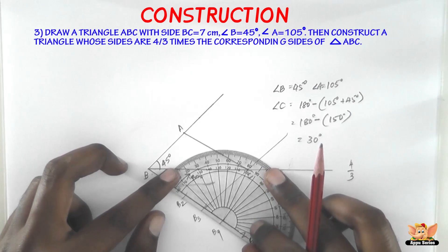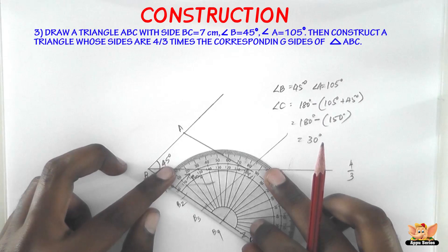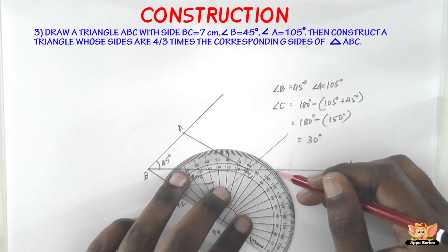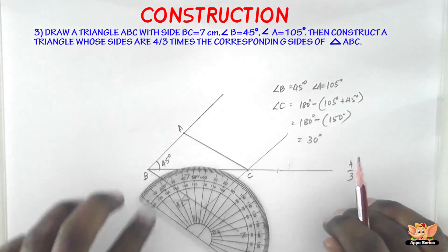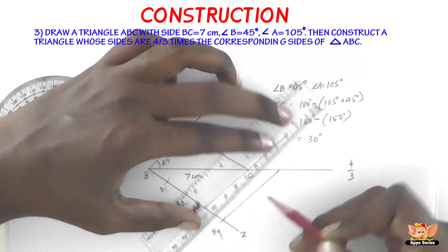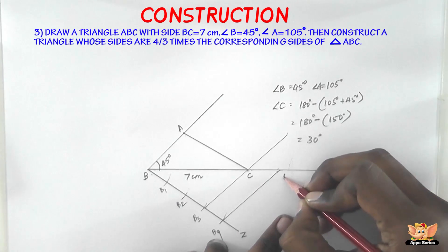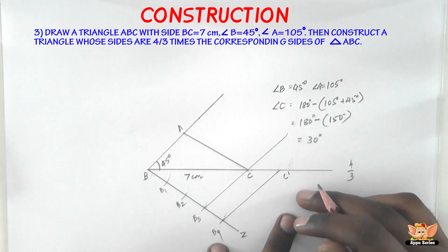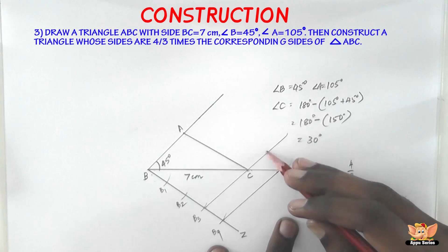So that's the same angle we need here, between 102 and 103. So here it is, between 102 and 103 is here. Join these points. So let's name this C dash. Now we've got B4, C dash.